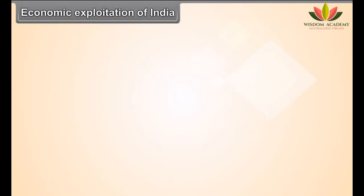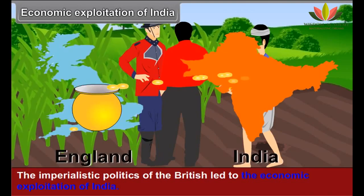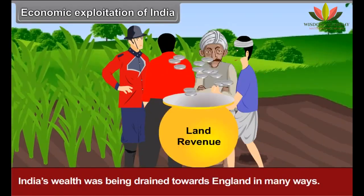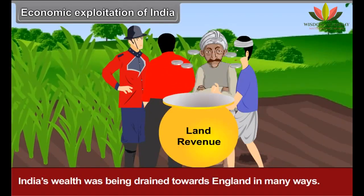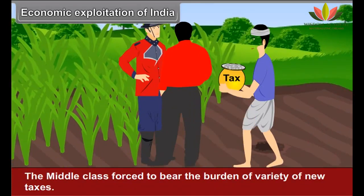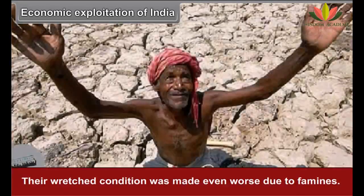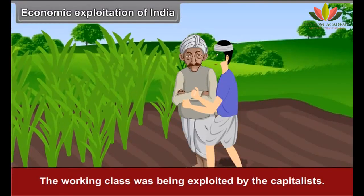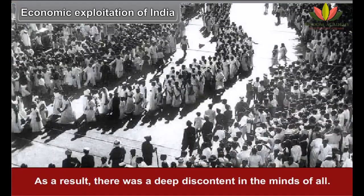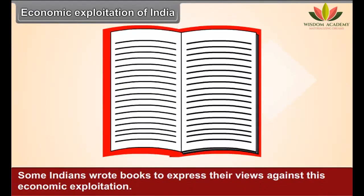Economic Exploitation of India: The imperialistic policies of the British led to the economic exploitation of India. India's wealth was being drained towards England in many ways. The middle class was forced to bear the burden of a variety of new taxes. The peasants were crushed by the burden of land revenue, and their wretched condition was made even worse due to famines. The working class was being exploited by the capitalists. As a result, there was deep discontent in the minds of all. Some Indians wrote books to express their views against this economic exploitation.